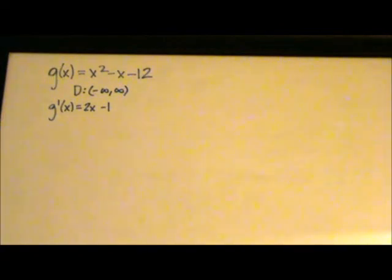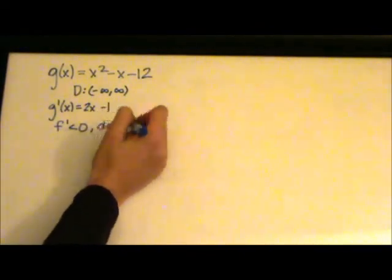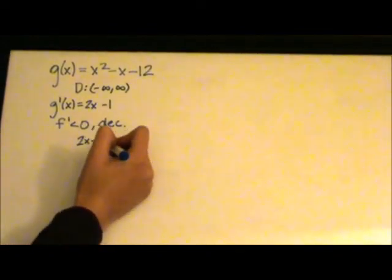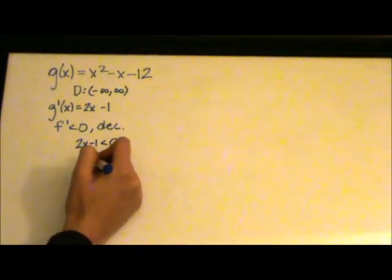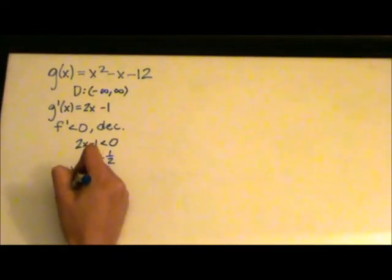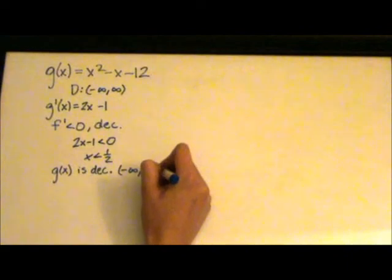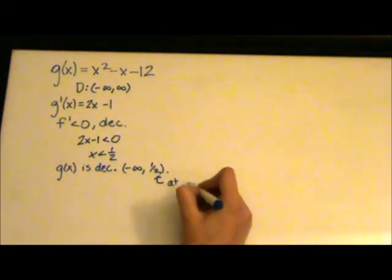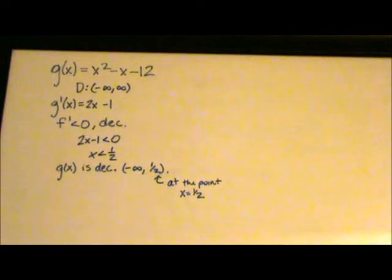First, let's try to find where this function is decreasing. Remember that the first derivative needs to be less than 0 for the function to be decreasing. Therefore, we're going to set our first derivative of g(x) to be less than 0 and solve. What we get is x < 1/2, meaning that g(x) is decreasing over the interval (-∞, 1/2). This is an open interval because at the point x = 1/2, g(x) is changing from decreasing to increasing, or so we can assume right now.